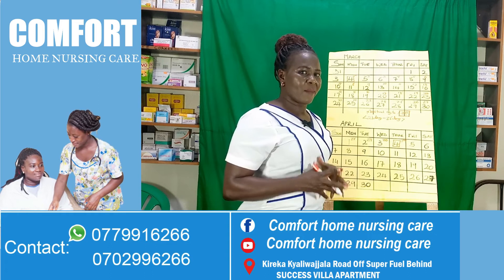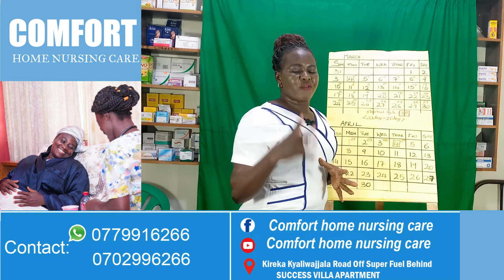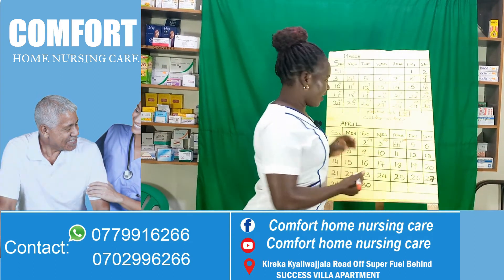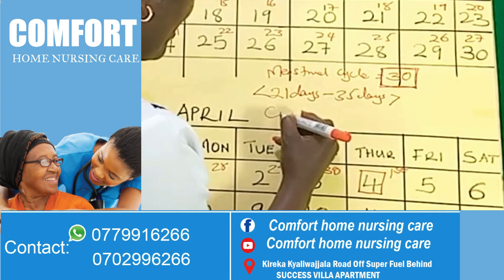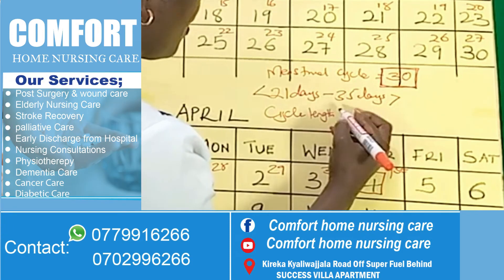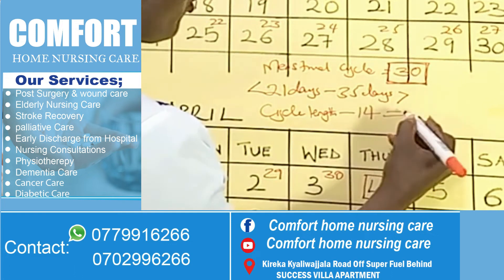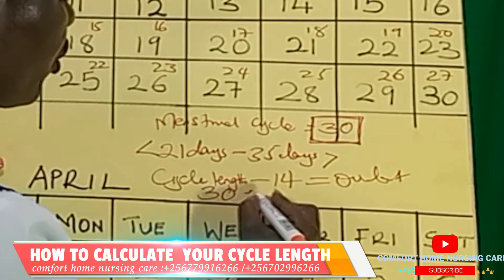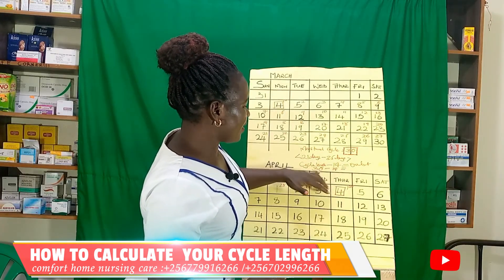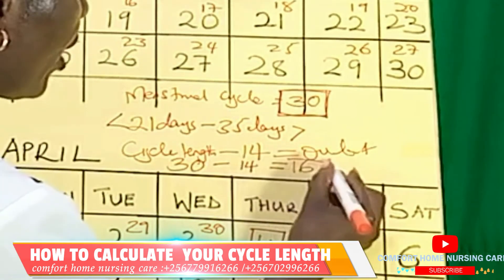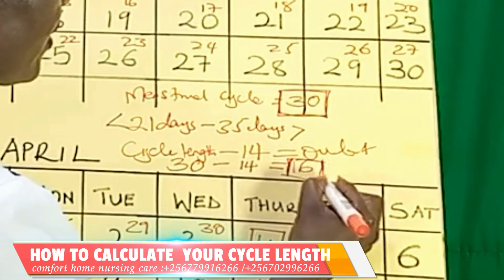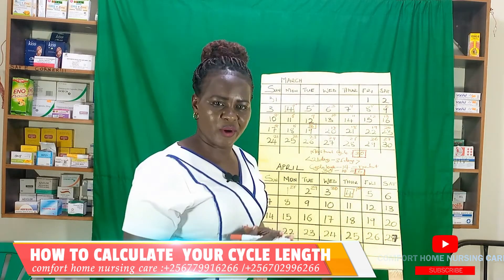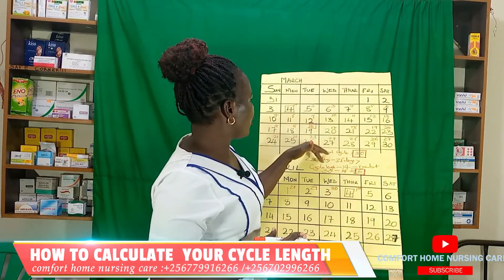As a lady, it is very important to know your cycle length because through it you'll be able to know your ovulation day. When you already know your cycle length, you calculate your ovulation day using: cycle length minus 14. For example, if your cycle length is 30, you subtract 14 from 30, which gives you 16 — meaning your ovulation day is day 16. So you look for day 16 from the start of your period, and that is when you ovulated.